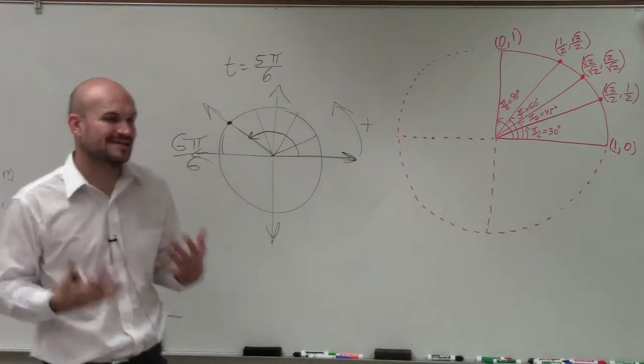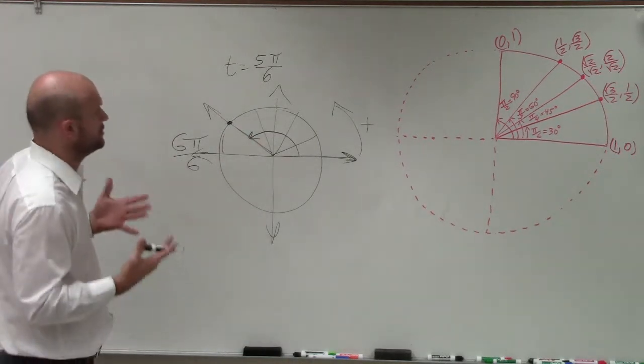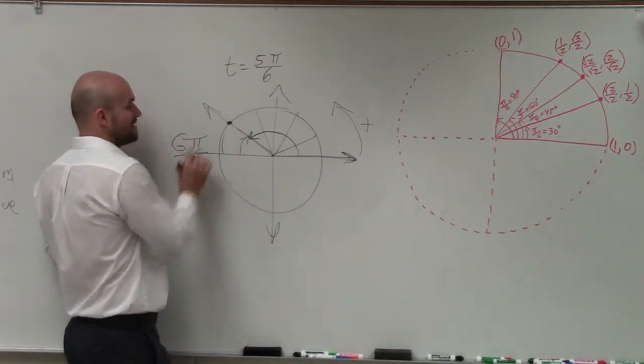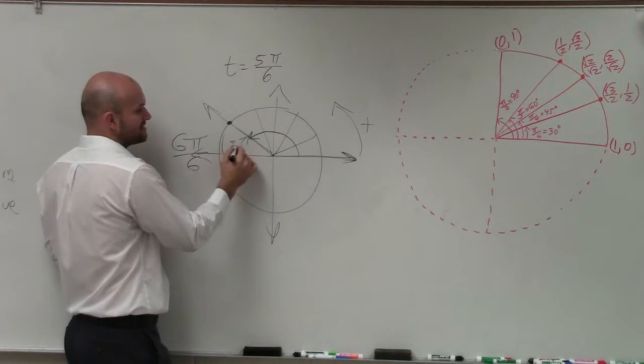And then we want to see, well, where is this angle crossing the unit circle? Well, again, if we're only pi over 6 away, right? 6 pi over 6, 5 pi over 6, I'm only pi over 6 away.